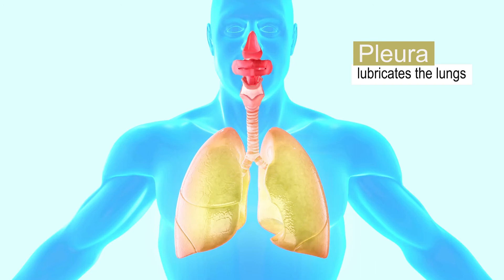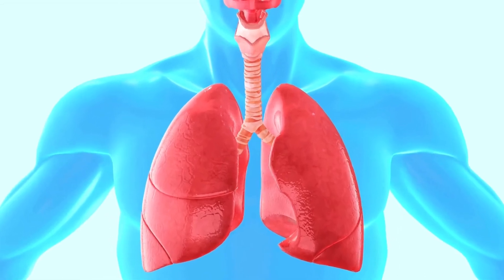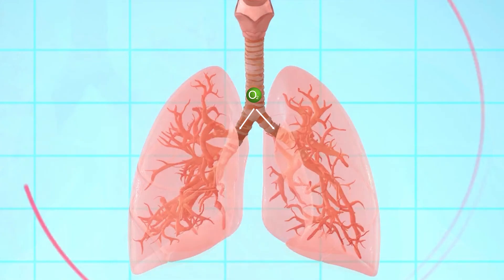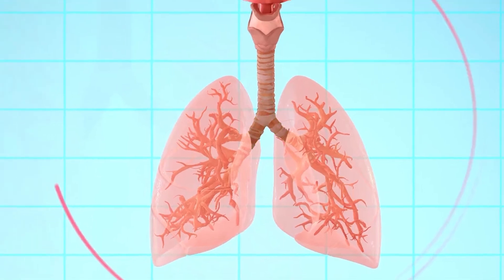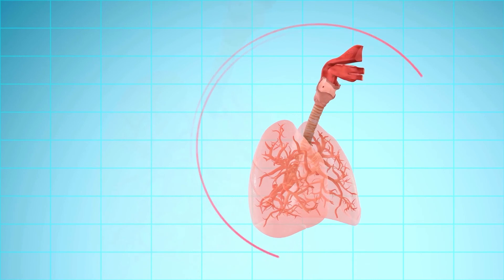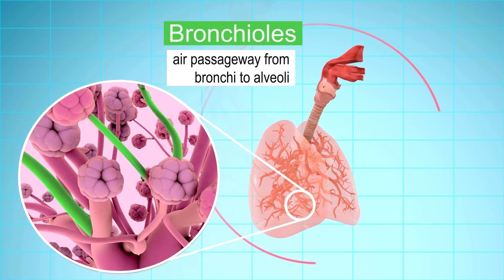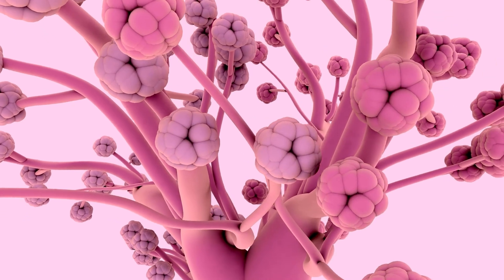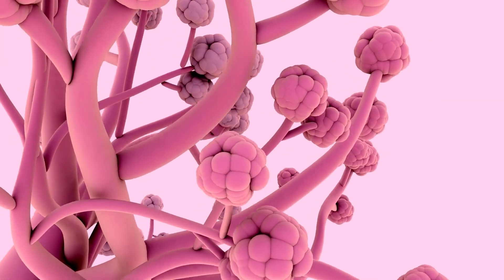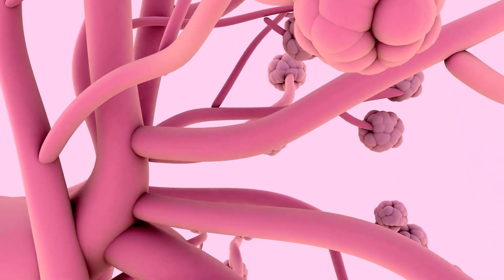The lungs are also surrounded by a thin membrane called the pleura, whose main function is to lessen friction by producing a fluid to lubricate the lungs when they expand during breathing. Before entering the lungs, the air reaches the trachea branching into two tubes — the left and the right bronchi — where the left bronchus leads to the left lung and the right bronchus leads to the right lung. These tubes continue to divide again and again, becoming narrower until they appear like very tiny tubes called bronchioles. At the end of the bronchioles are hundreds of round air sacs called the alveoli, which inflate during inhalation and deflate during exhalation. The alveoli serve as the site of respiration in the lungs, where the exchange of gases — oxygen and carbon dioxide — occurs.